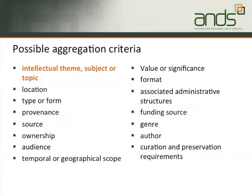So these are some of the possible ways that you could bring things together to form collections. The one that we like is the nice brightly coloured one at the top - some kind of intellectual theme, subject or topic. We'd like the collections to be brought together in a way that can be described as about something. So this is a collection of data about something, about a particular research question, about a particular thing that we're looking into. That's probably the top, best possible result from the ANS perspective.